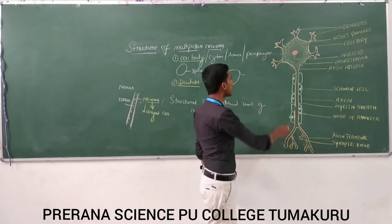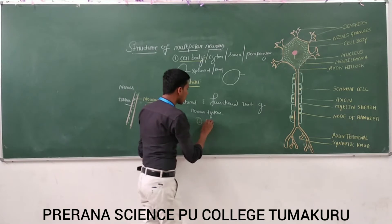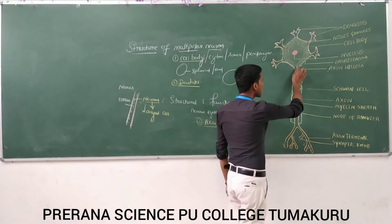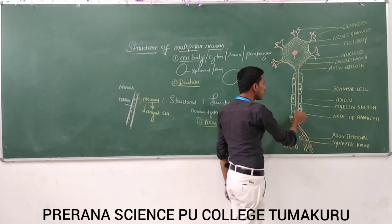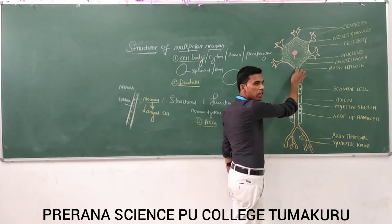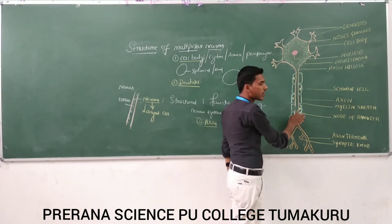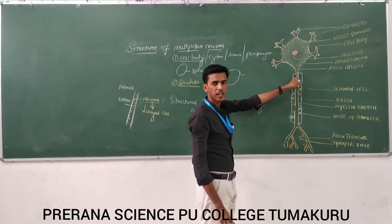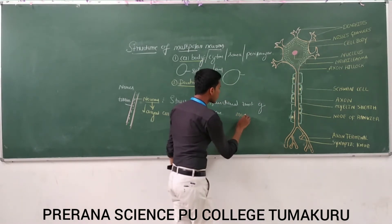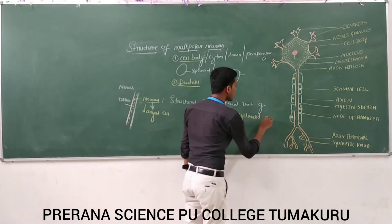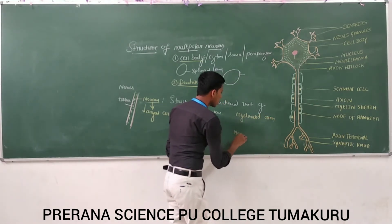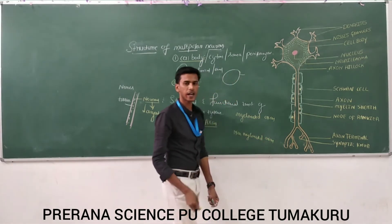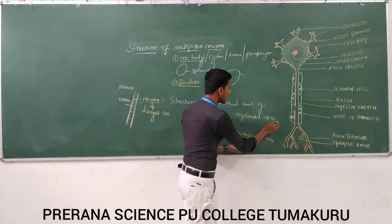And the third portion is the axon. At the base of the cell body, a long nerve fiber extends — that is called the axon. So these axons may be of two types: myelinated axon and non-myelinated axon. Just imagine it is a nerve fiber, or the axon.